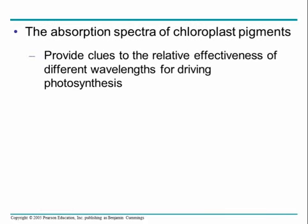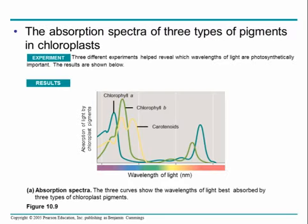This shows us how effective different wavelengths are for driving photosynthesis. A while back, a very interesting experiment looked at different wavelengths of light and how photosynthetically important they were, creating an absorption spectrum. Different pigments absorb different wavelengths of light — the chlorophylls largely prefer violets and blue lights, absorbing more energy from those, as well as some in the orange-red. Green is the worst.